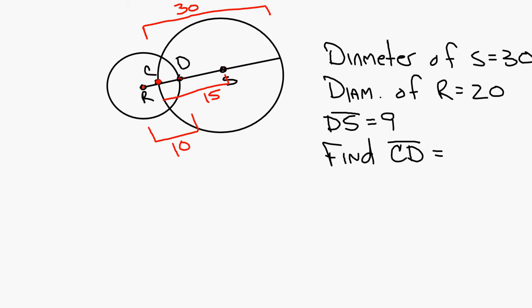So the question is, how far is it? D to S is 9. This little piece is 9. Find C to D. You see it? You're looking for this piece right here, from C to D. You're looking for that piece. All right, look. If it's 9 from here to here, and it's 15 from S to R, then how far is it from D to C? Very good.